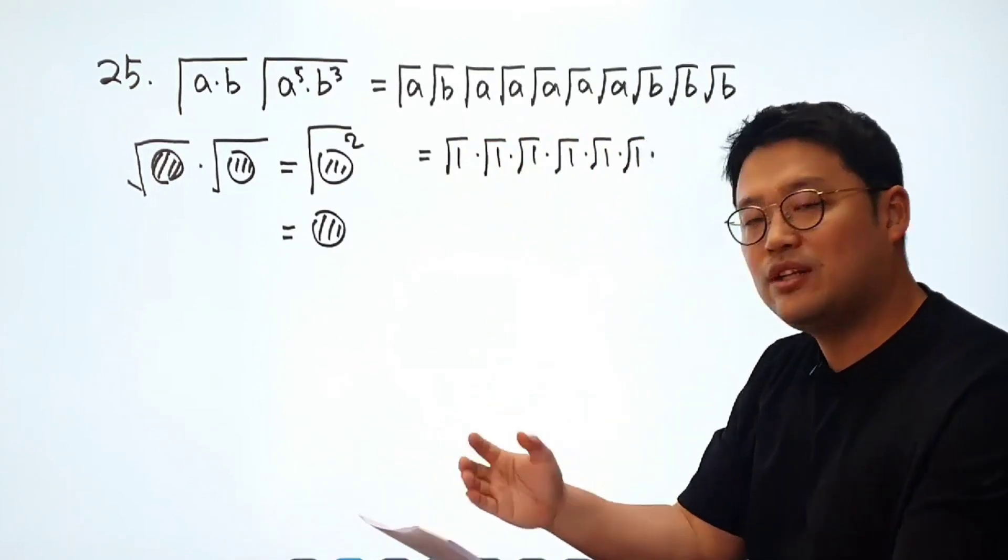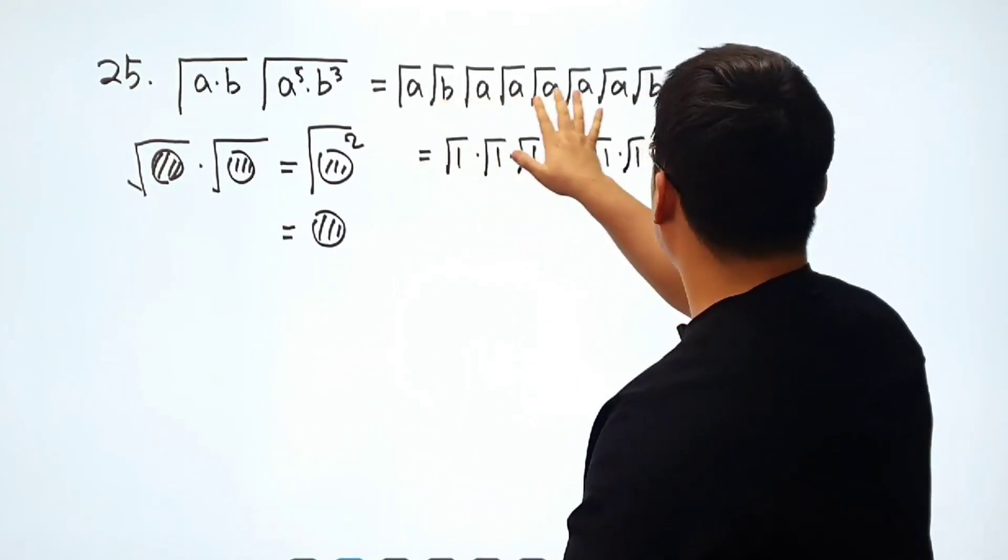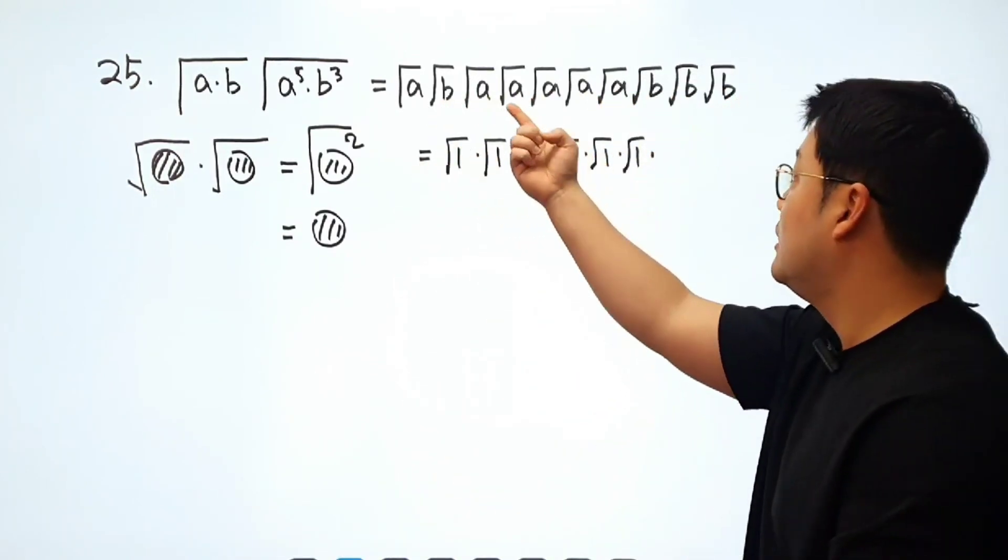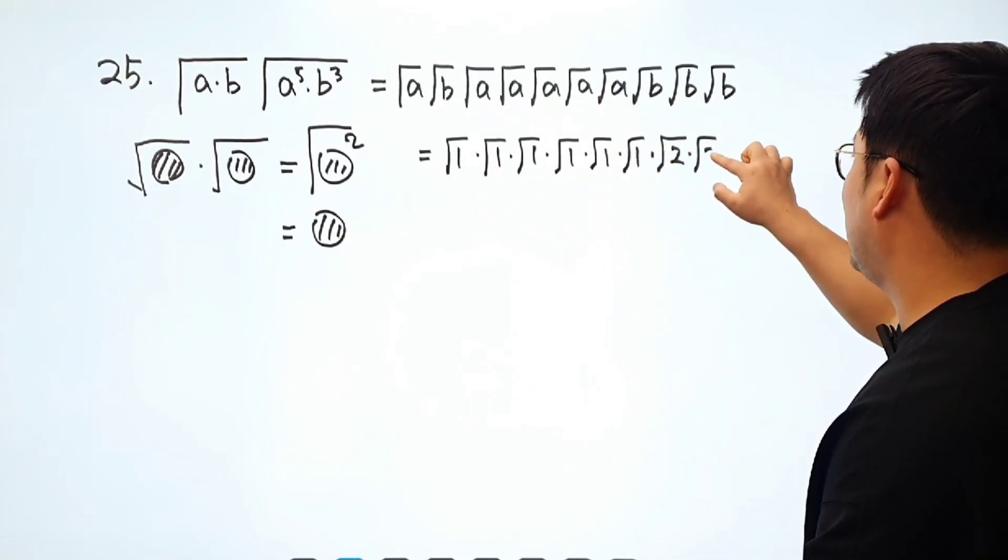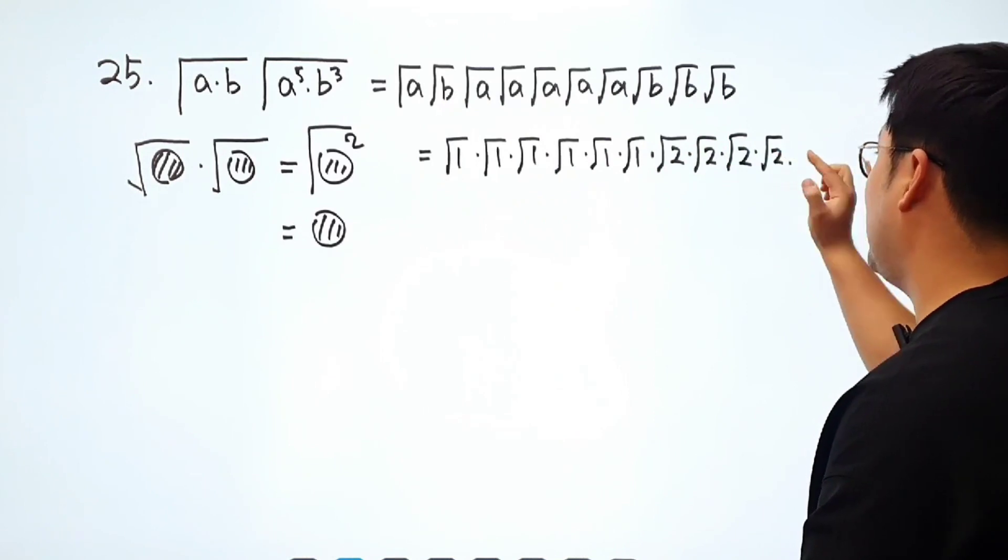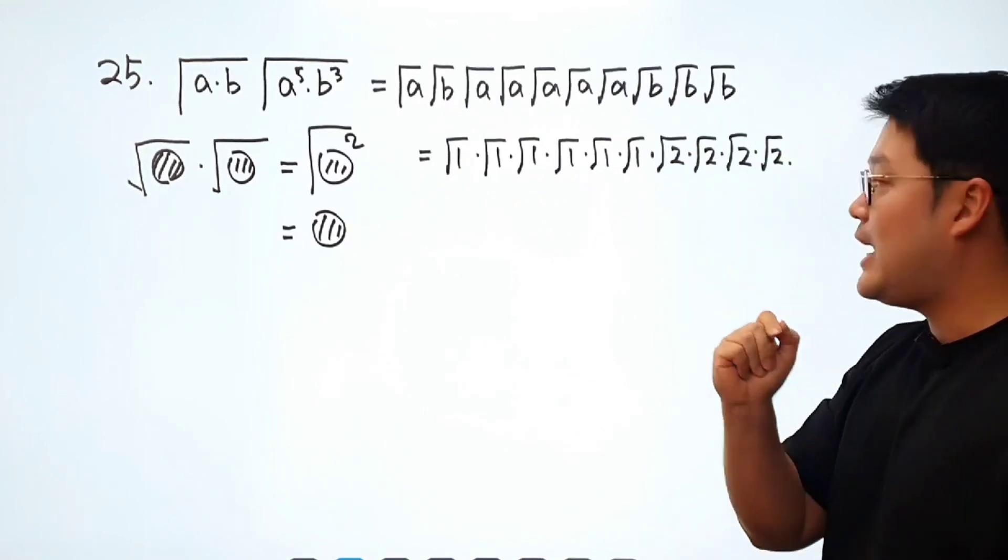But what about rad two? I think I got four number of times that root B has appeared. So I'll say root two and rad two and rad two and rad two, just going to write it down in this following format.